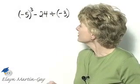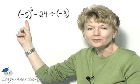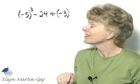Let's simplify this expression. Notice we have negative 5 to the third power—that's an exponent—minus 24 divided by negative 3.